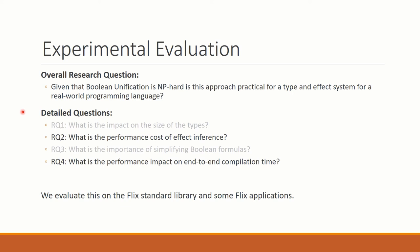And so in the paper, we consider four research questions. We consider what is the impact on the size of the types when we enrich the type system with these boolean effects? What is the performance cost of effect inference? What is the importance of simplifying boolean formulas during type inference? And what is the performance impact on end-to-end compilation time? Now, due to lack of time, I will only address research question two and four in this talk.